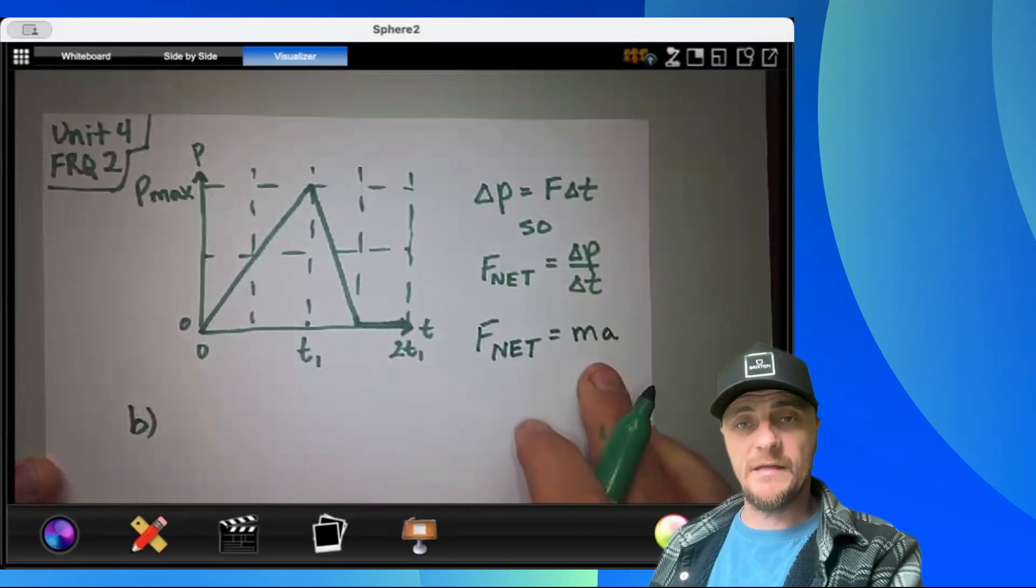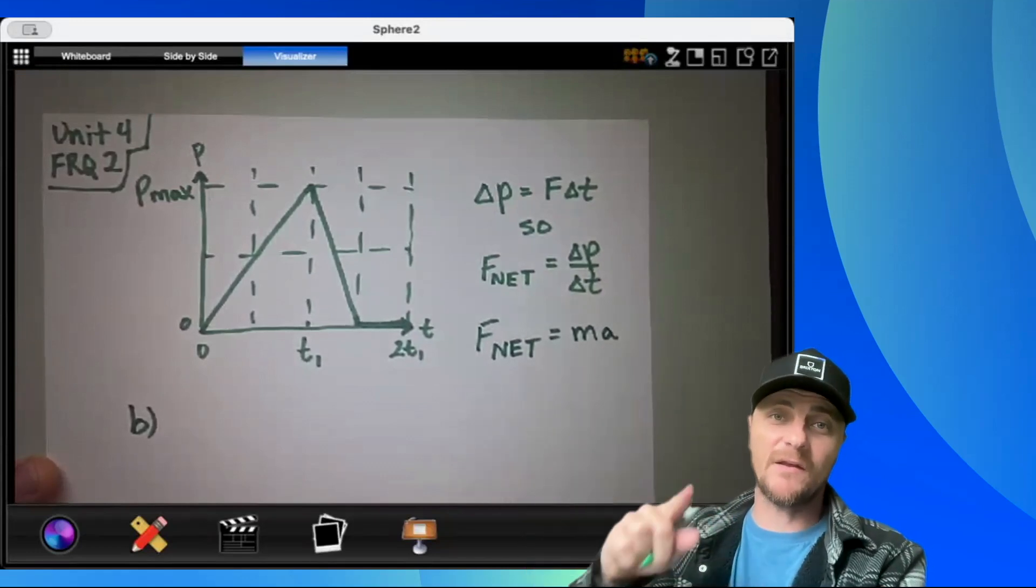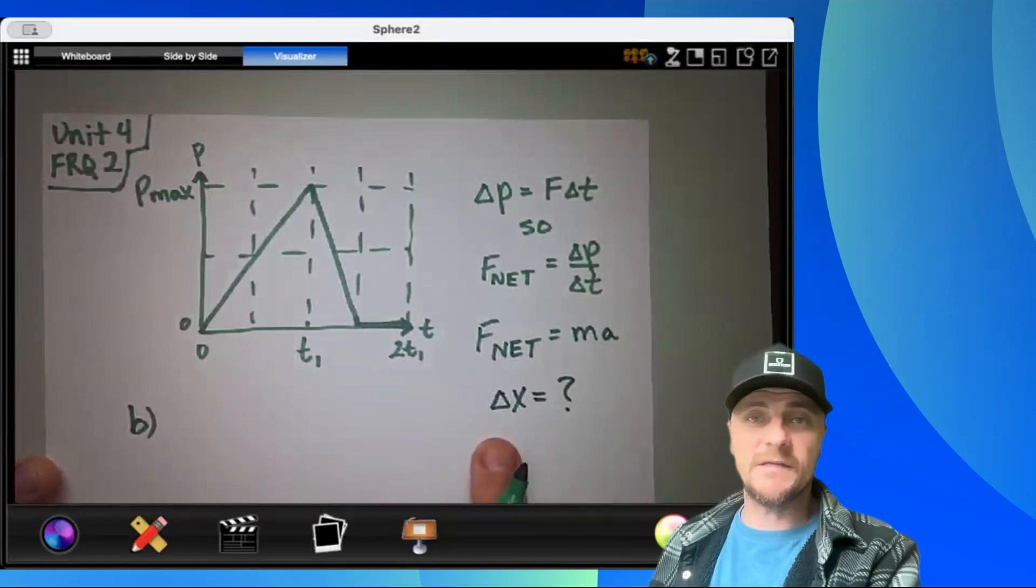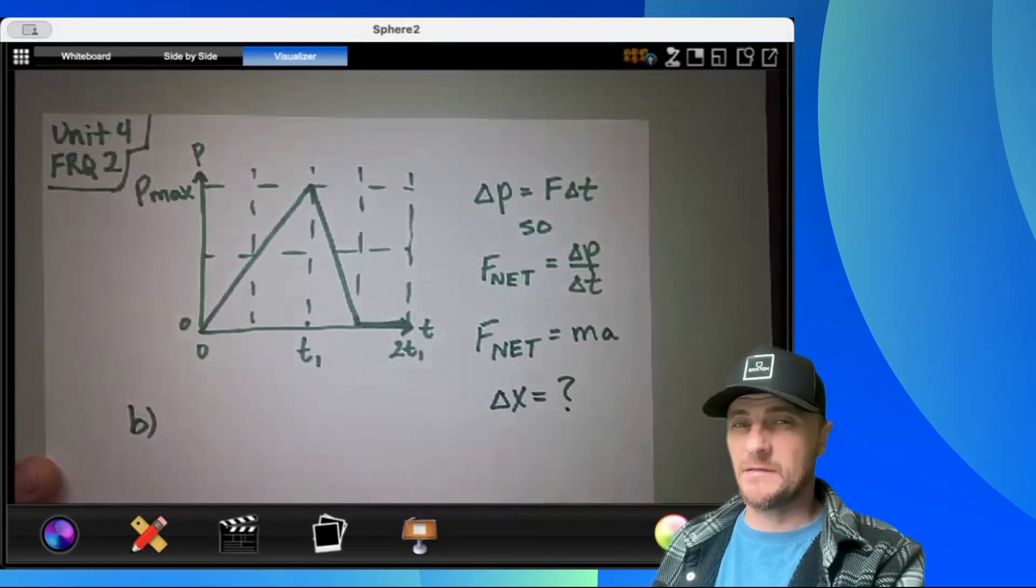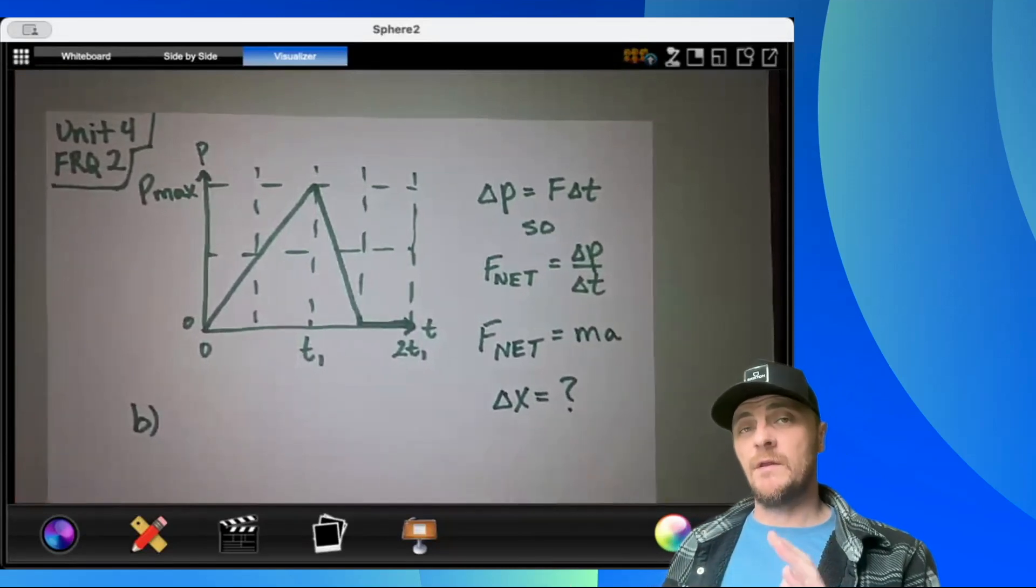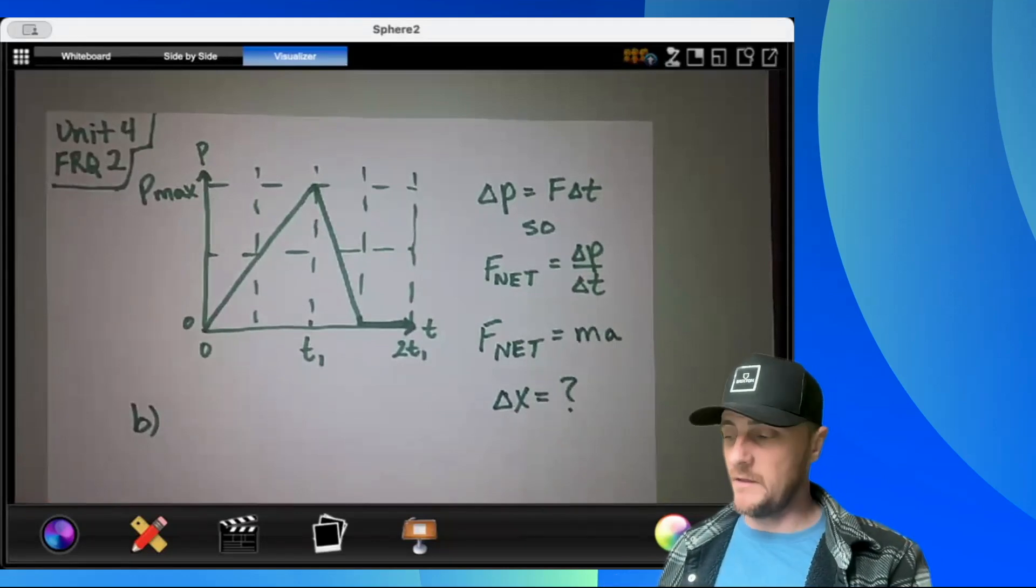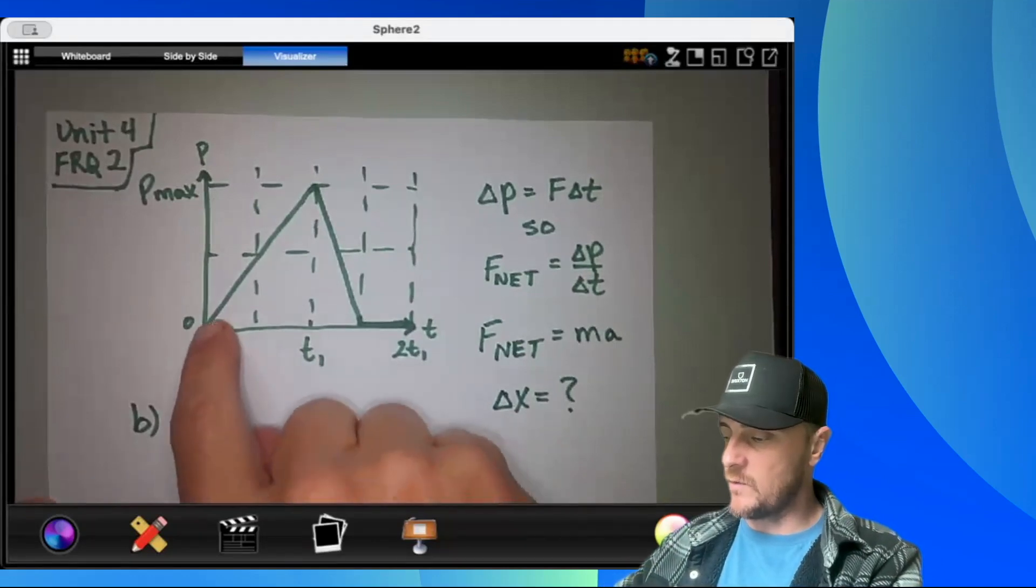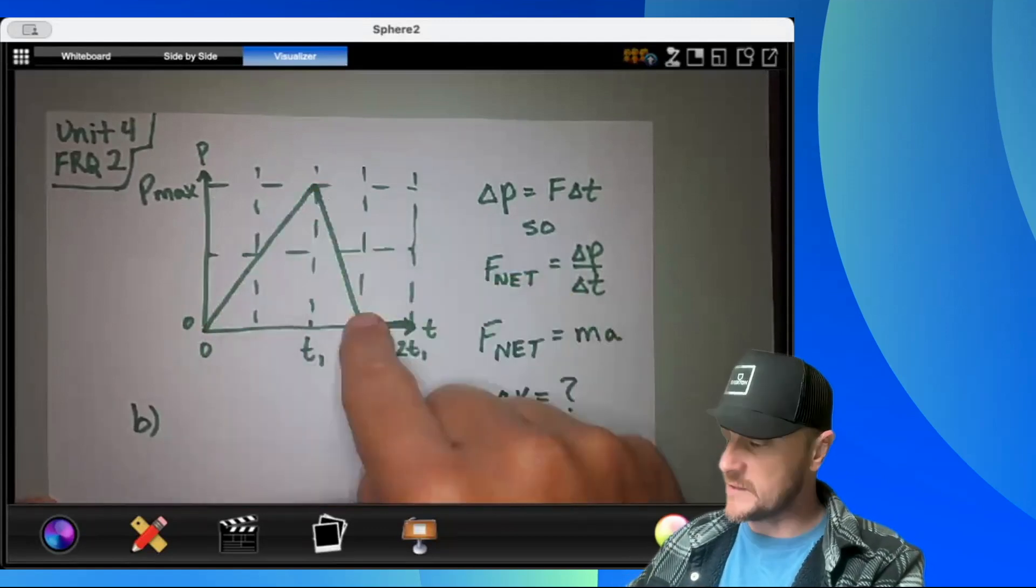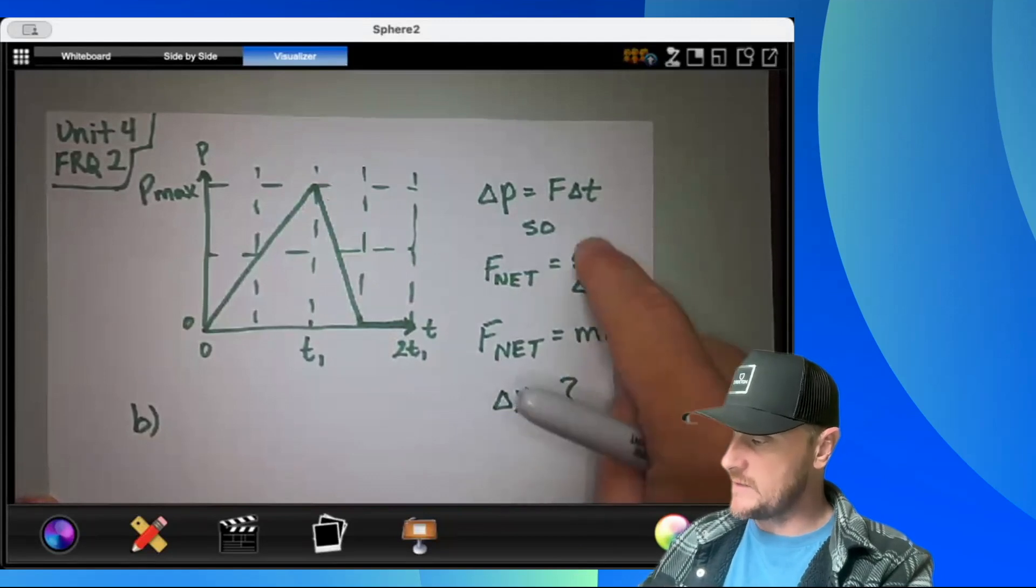And the reason for that is if I can get an expression for acceleration, I know I can apply it to my kinematic equations, which we know involve my displacement delta x. So that's the thought process and the strategy. It should also be noted here that when we're using kinematics, it only works while acceleration is constant. So we're going to need a kinematic equation for this portion when our acceleration is positive and a kinematic equation for this portion when our acceleration is negative.